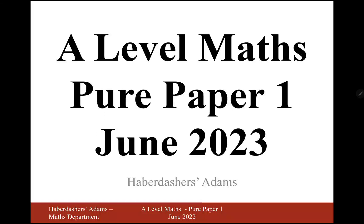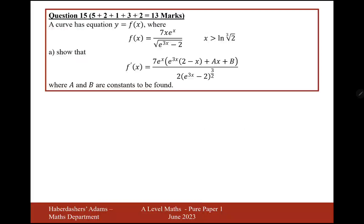Hello, welcome to the A-level maths Paper 1 of June 2023. Here we're looking at question 15. A curve has equation y equals f of x, where this is the equation here. Show that this is its differential where a and b are constants to be found. This is probably one of the hardest differentiation questions I've seen in the A-level maths paper, but let's give it a go.